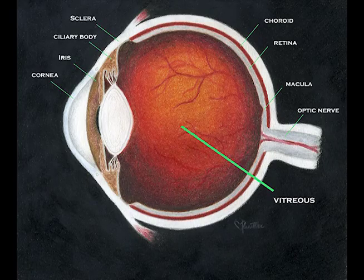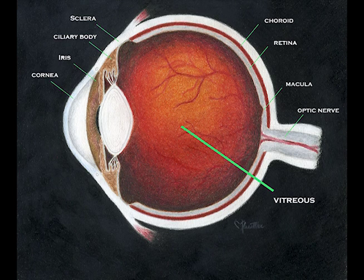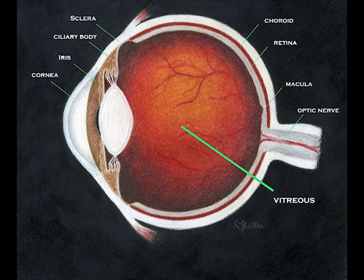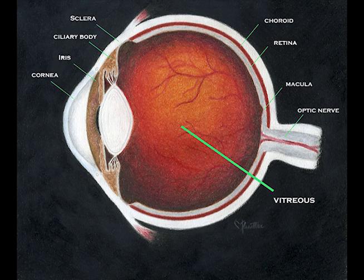Here is an artist's rendition of the eye as seen in cross-section. The macula is simply the central area of the retina that is capable of seeing details. If you want to see an object clearly, you move your eyes so that the image projects onto the macula.